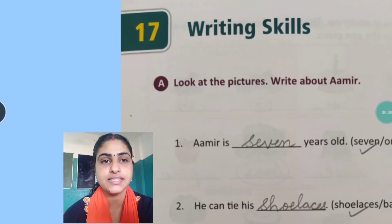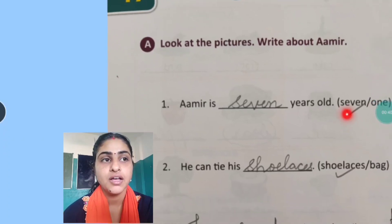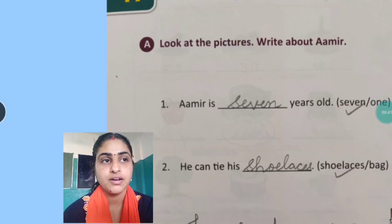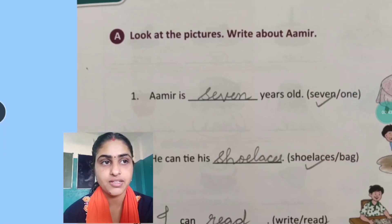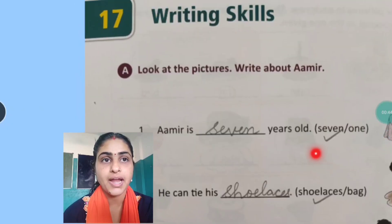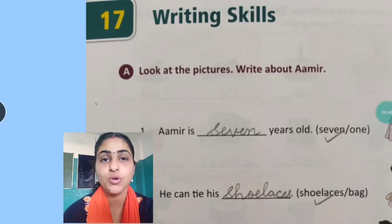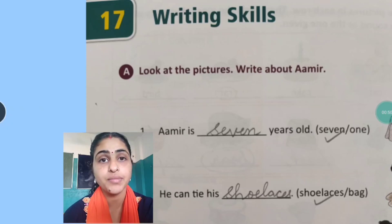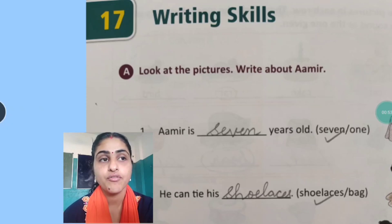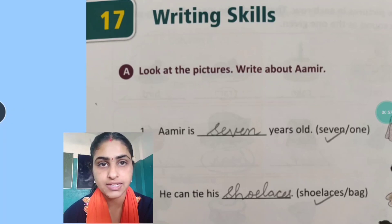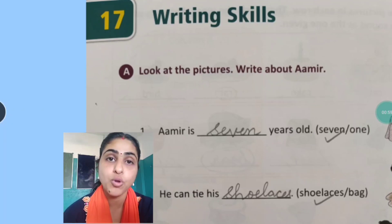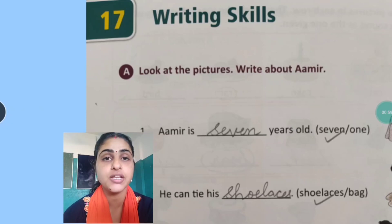Now here you can see all the photographs are given. The pictures are given and you have to look at the picture and write about Amir. Here Amir is a boy. Woh yaha pe kuch kuch kar raha hai. Jiska photos aap deekh sakte ho. You have to look at the picture and complete the sentences.